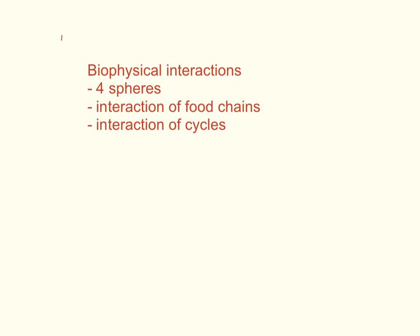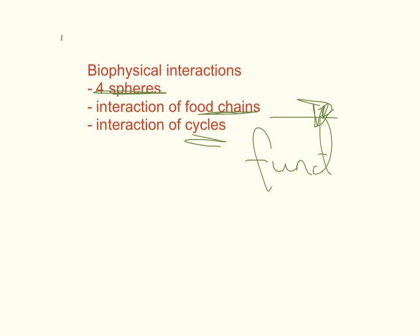Biophysical interactions — the first thing circled in the dot point — really refers to a good understanding of the four spheres: the hydrosphere, the biosphere, the lithosphere, and the atmosphere. You need to understand different processes within each of the spheres, and also how these processes interact with all the other spheres, and then how they create and lead to diverse ecosystems. The other interactions you need to be aware of are the interactions within the food chain and within cycles, which links to functioning, which we'll talk about in a moment.